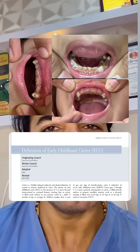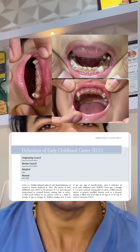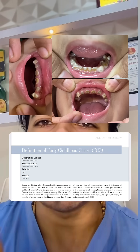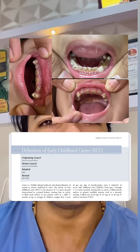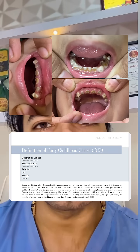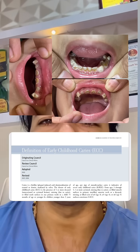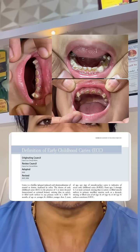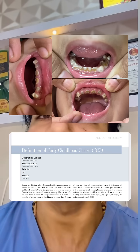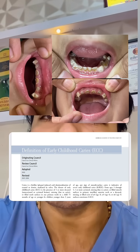By AAPD definition, in a four-year-old, any child with more than five decayed, missing, or filled surfaces, or any smooth surface caries on maxillary anterior teeth, is classified as severe early childhood caries.